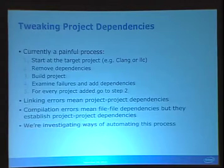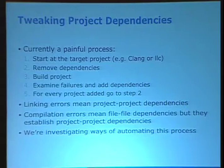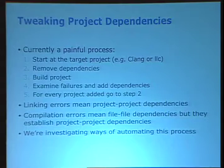The current process to optimize the dependencies is very painful. We start from the top — basically the binary that you're trying to build — and then remove dependencies, build projects, look at the failures, and then start again at the dependencies that you just added. Linking errors usually mean project-to-project dependencies, and compilation errors mean something like a header that is not there. Those are file-to-file dependencies, but they establish a link between project and project.